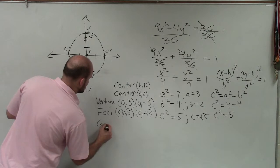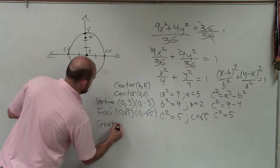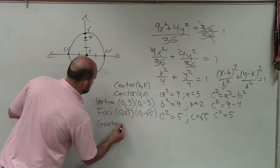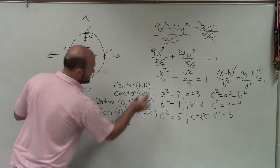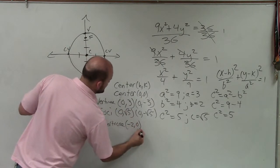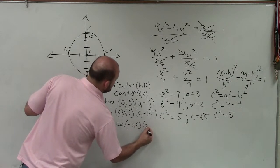And then the co-vertices are now going to be left and right. So that's going to be, that's distance negative 2. So negative 2, 0, and 2, 0.